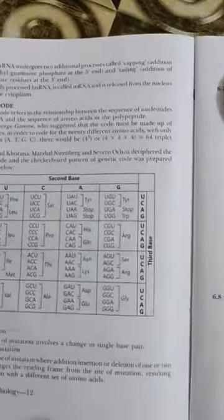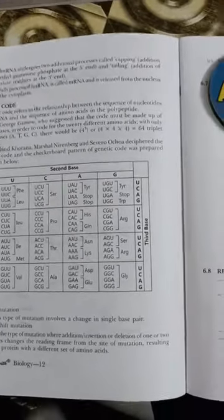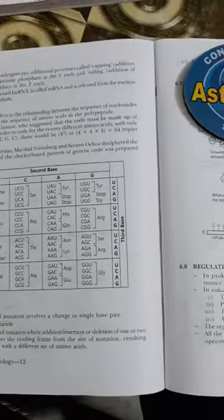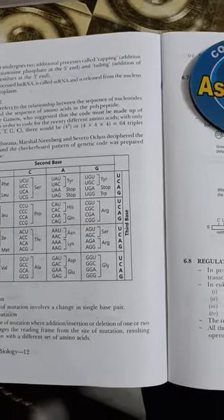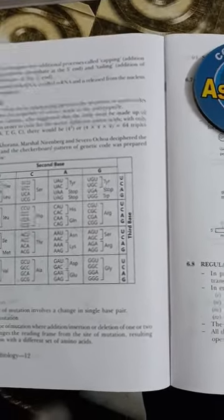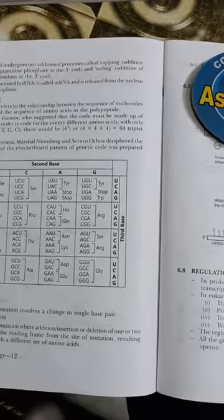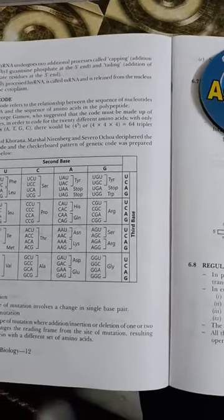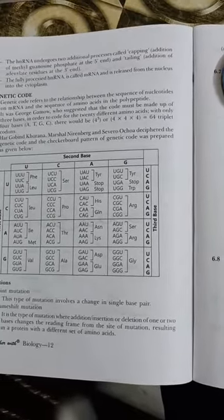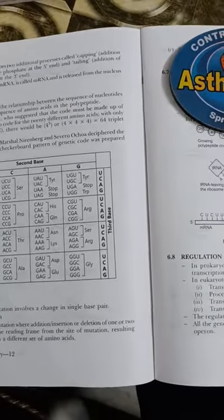Triplet codon. Har Gobind Khurana, Marshal Nirenberg, and Severo Ochoa prepared the genetic code and the checkerboard pattern of genetic code.